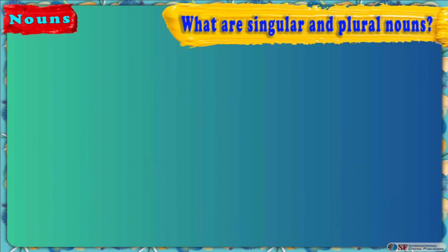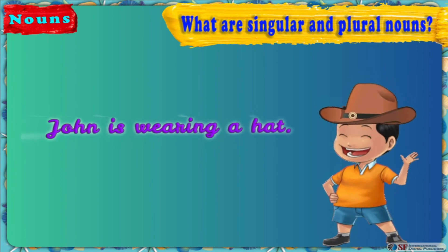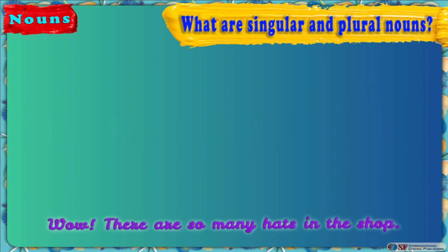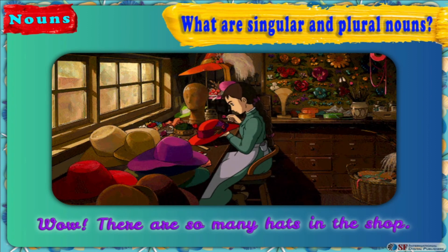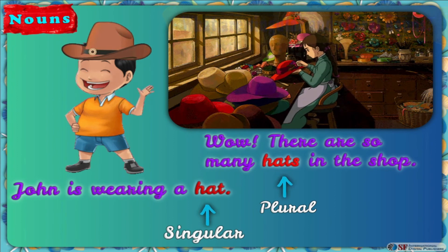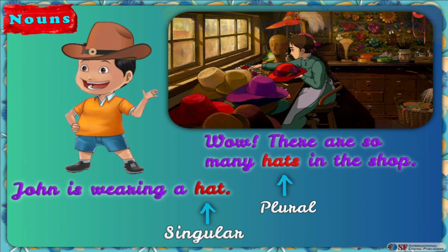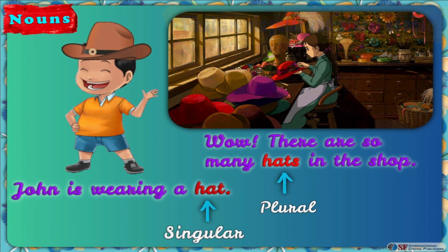The first sentence is: John is wearing a hat. And the second sentence is: Wow, there are so many hats in the shop. Mom, in the first sentence, John is wearing only one hat. So here, hat is a singular noun. Whereas in the second sentence, there are many hats in the shop. So here, hats is a plural noun.